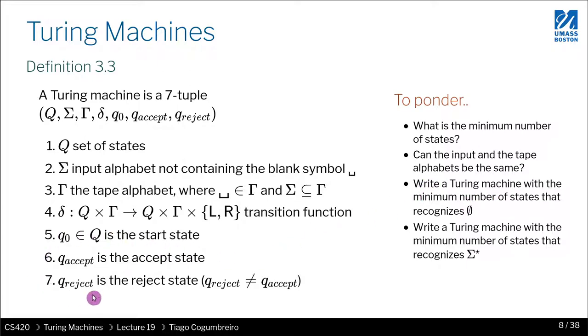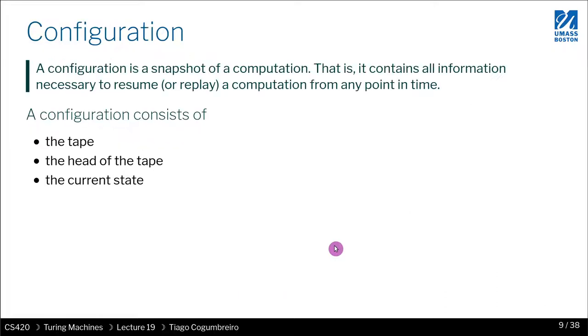And then, knowing the number of states, think about how would you go about and write a Turing machine that rejects all words, so recognizes the empty set. And think about how would you write a Turing machine that only accepts the empty string. And think about how would you write a Turing machine that accepts all strings. This is what sigma star means. All strings. All possible strings.